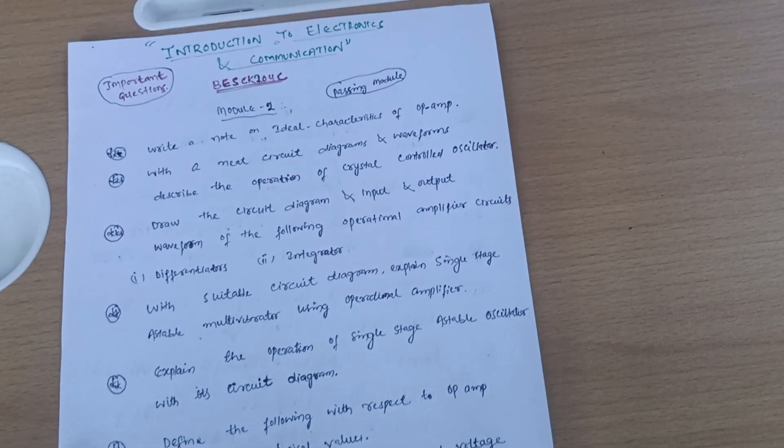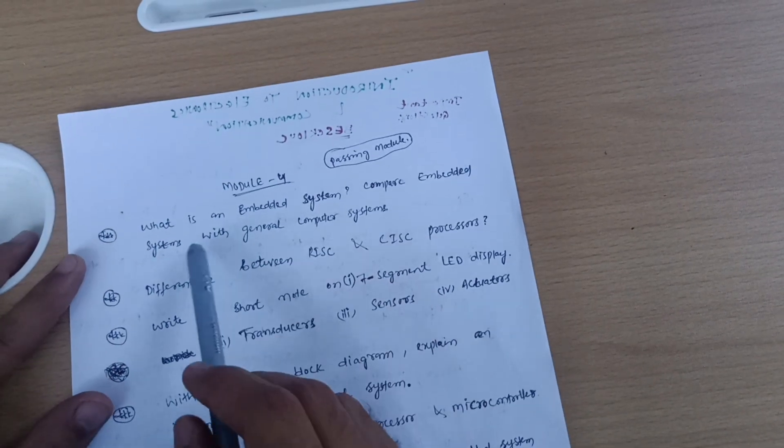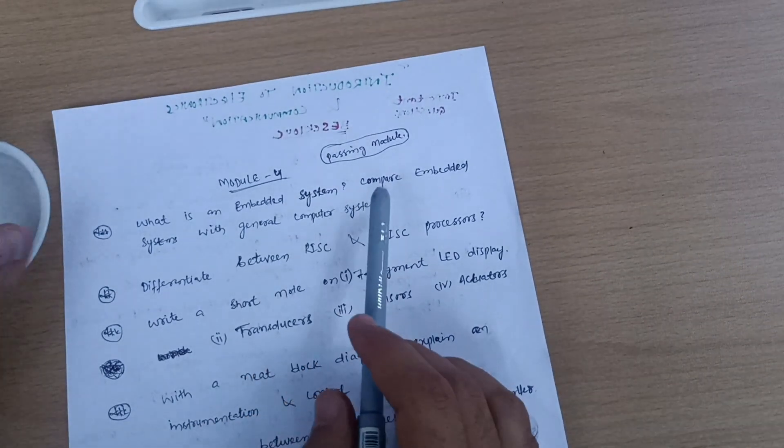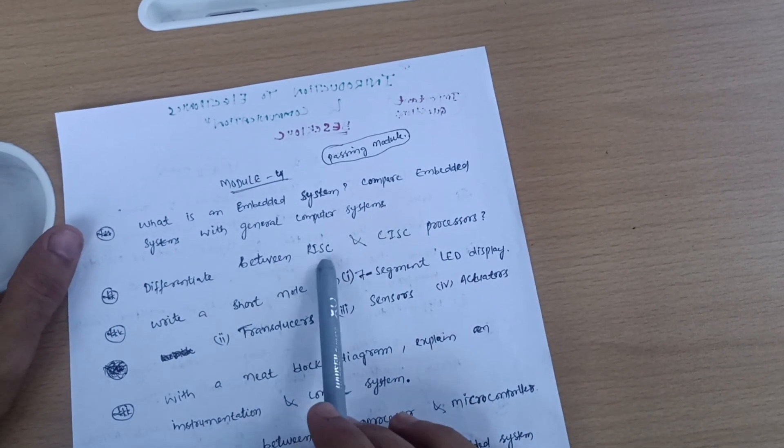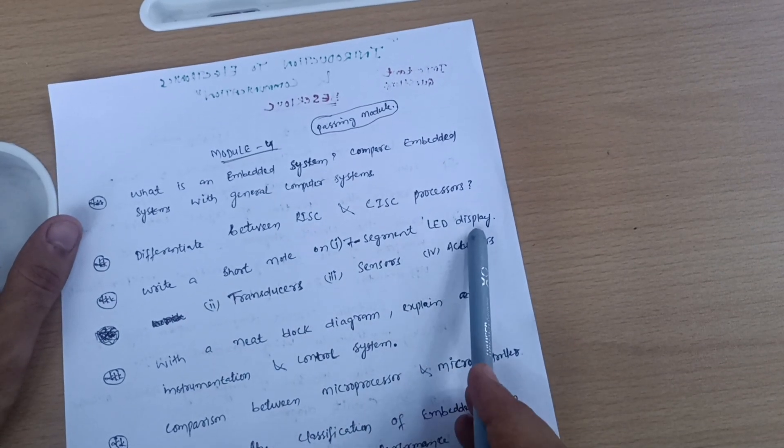Let me discuss another passing module, which is Module 4. Important questions include: what is an embedded system? Compare embedded systems with general computer systems. Differentiate between RISC and CISC processors. Write a short note on seven segment LED display.